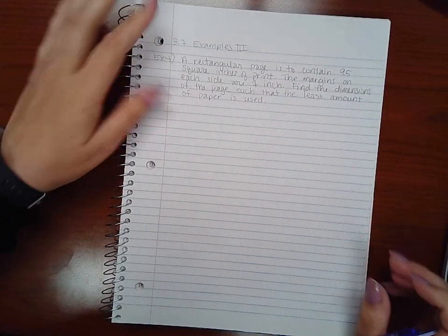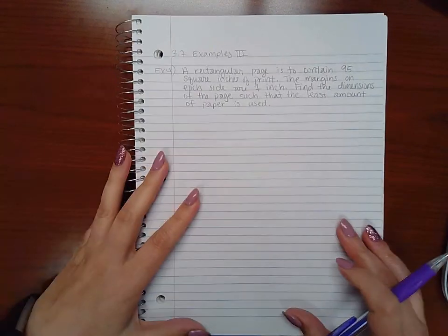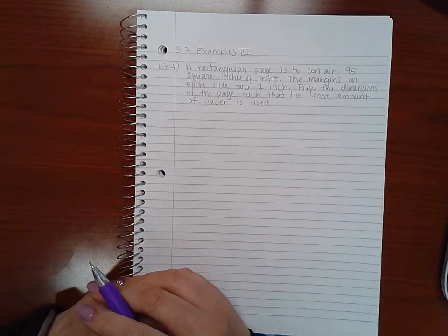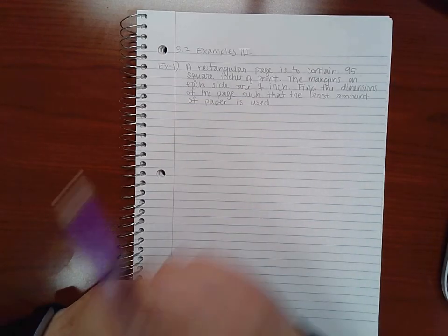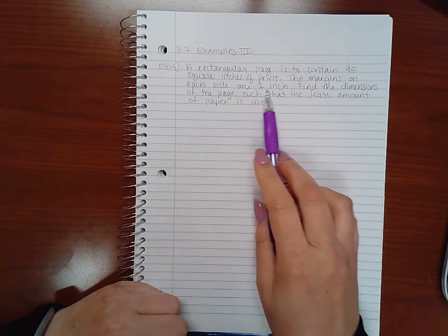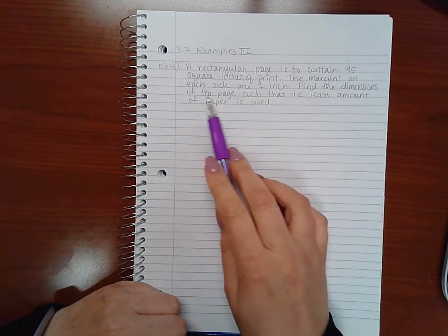In this video we will cover example 4 from section 3.7. Here it says a rectangular page is to contain 95 square inches of print. The margins on each side are one inch. Find the dimensions of the page.